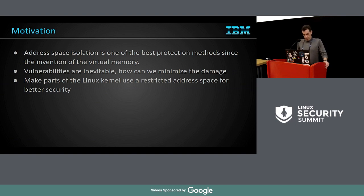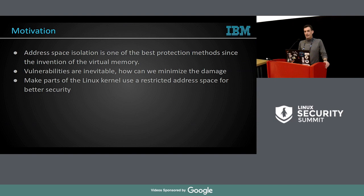One of the assumptions is that vulnerabilities are inevitable and there will always be some hole somewhere — some system calls that don't take proper care of race conditions that can be exploited. So if we can create restricted address spaces for execution of some kernel functionality, then a vulnerability that exploits something in such a restricted address space will still make an attacker's life harder to get to other kernel code and data that is not mapped in that restricted address space.